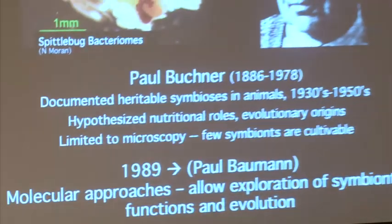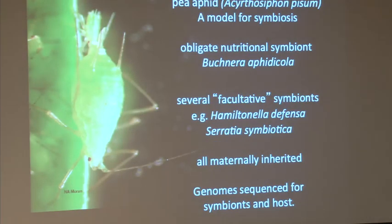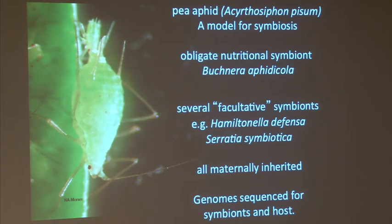The Baumans started with aphids and Buchnera as the first system, named Buchnera, and began to realize you could use sequences to actually explore this world — which has now turned into a giant field with lots of people in it. One of the models is the pea aphid model. Pea aphids have the obligate symbiont Buchnera aphidicola and can also have several facultative symbionts — Hamiltonella defensa, Serratia symbiotica — which are also maternally transmitted with occasional horizontal transmission.